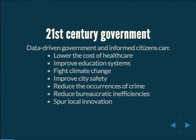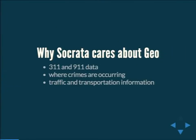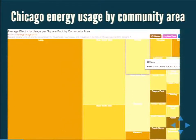A lot of this data is geographic in nature. If you look at 9-1-1 data, 3-1-1 data, crime data, most of it has some kind of longitude, latitude, or address. For example, this is a plot of Chicago energy usage by community area — the bigger squares represent civic areas using more energy, and you can go over each area to see relative energy usage.